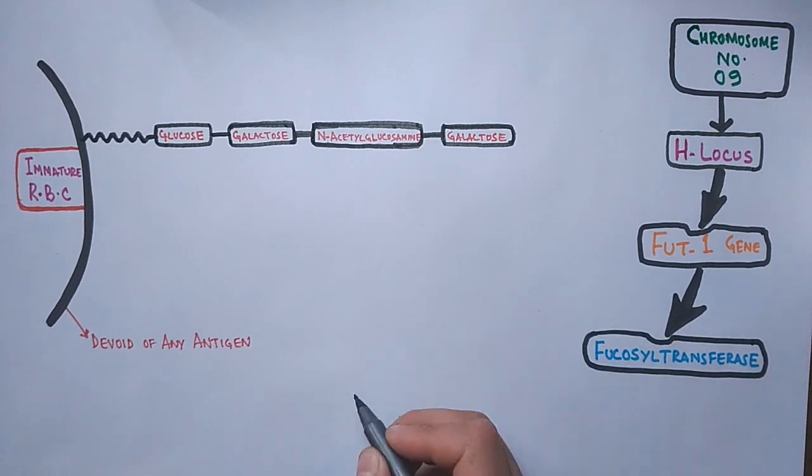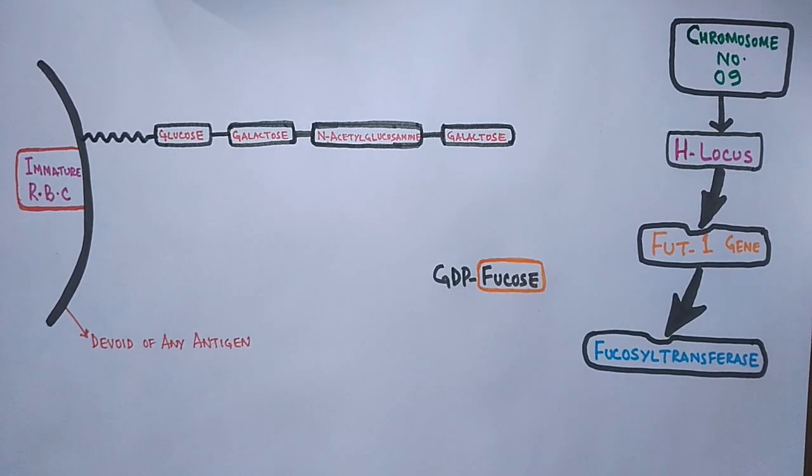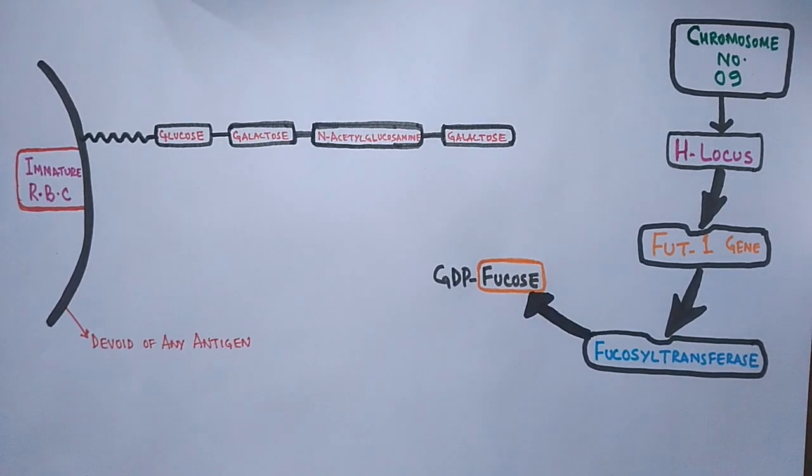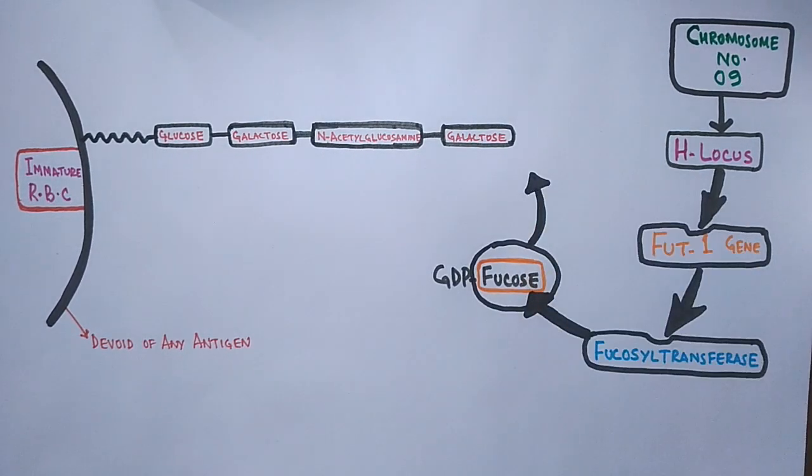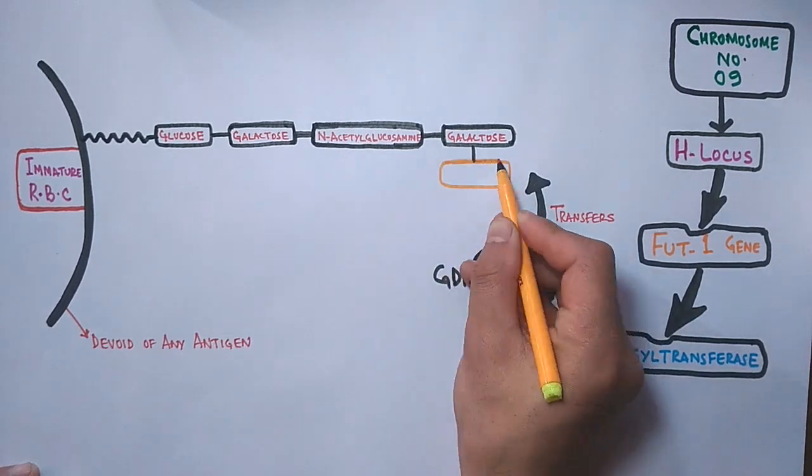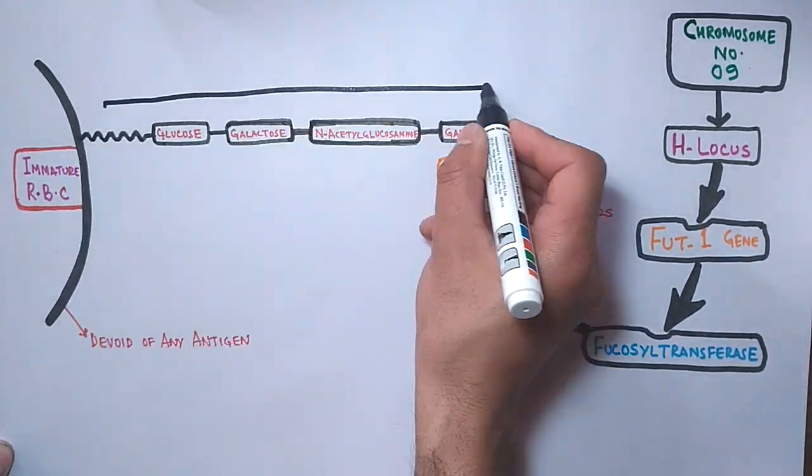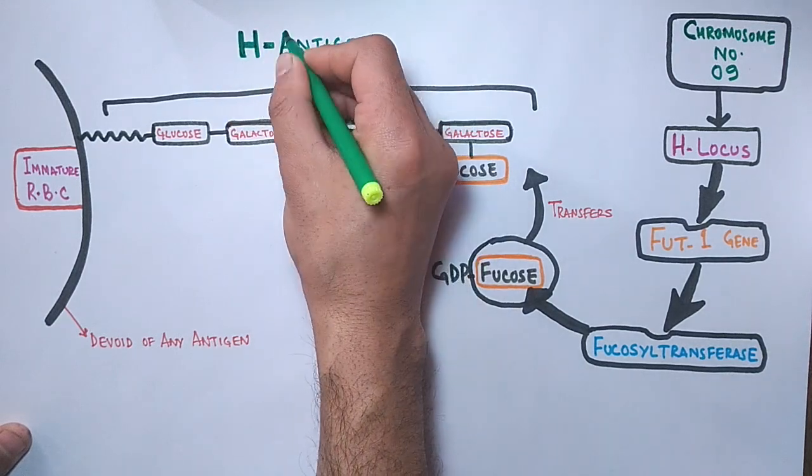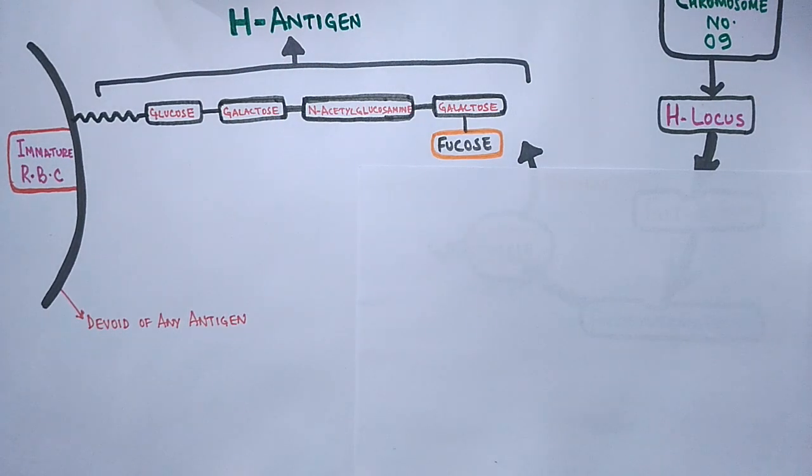We see the function of Fucosyltransferase enzyme is that it will transfer the Fucose sugar from GDP-Fucose molecule towards the oligosaccharide chain on RBC surface. As you can see in this diagram, on this addition the surface molecule is now called H antigen and this H antigen molecule is precursor for both A and B antigens.